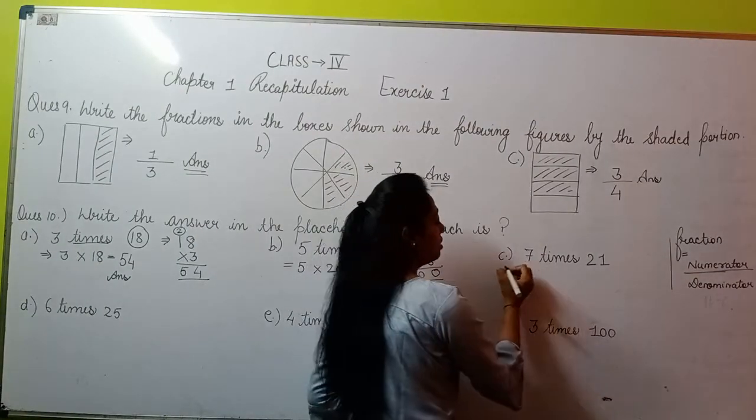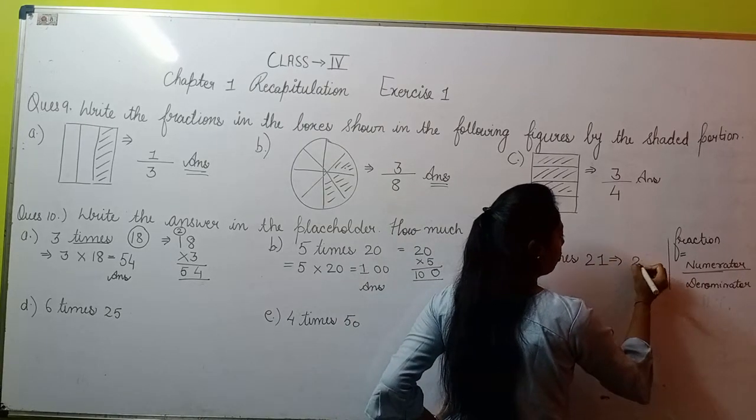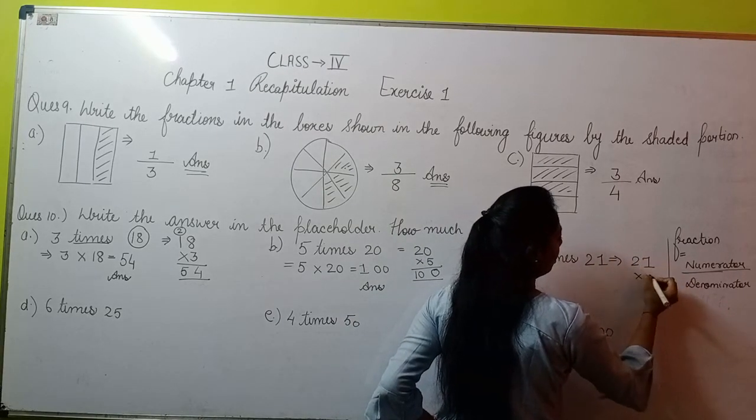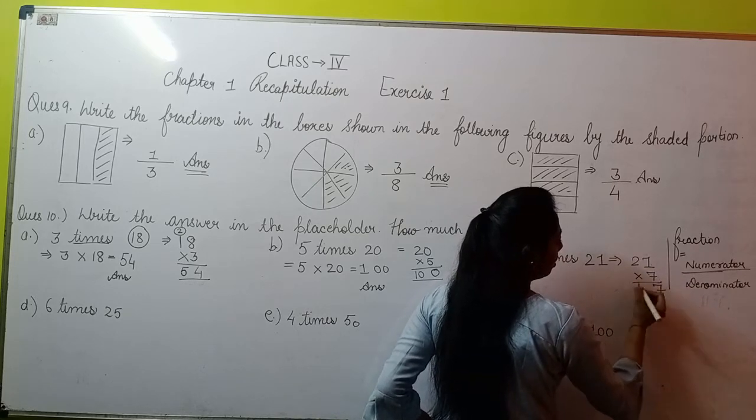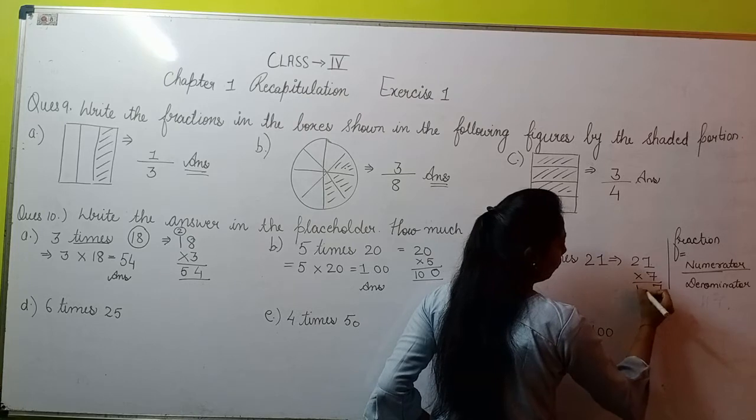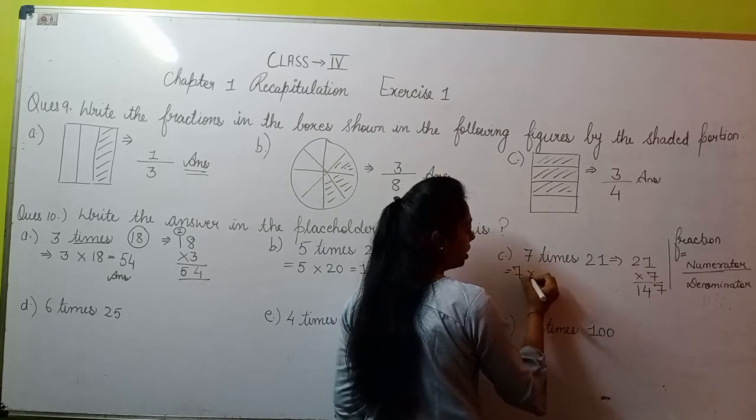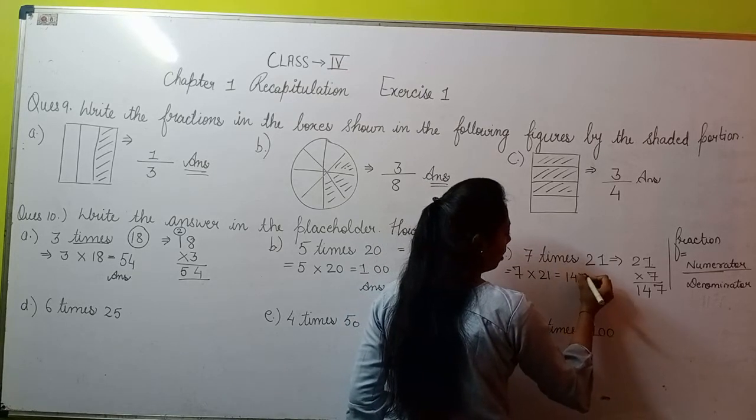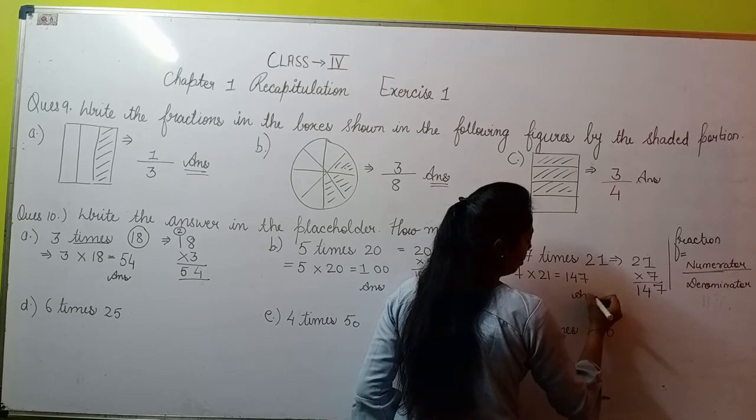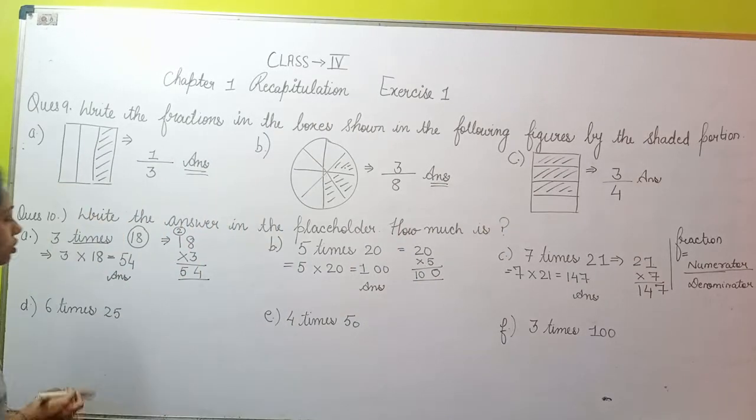Similarly, moving to part C. Part C given is 7 times 21, which means you multiply 21 by 7. 7 ones are 7, 2 sevens are 14. We did 7 times 21, which is 7 multiply by 21, and the answer is 147. This is your answer for part C.